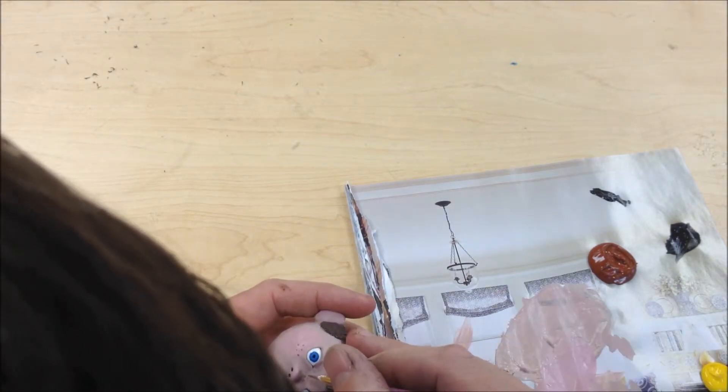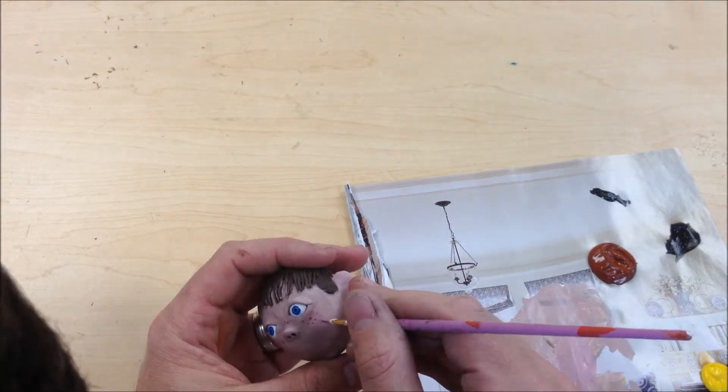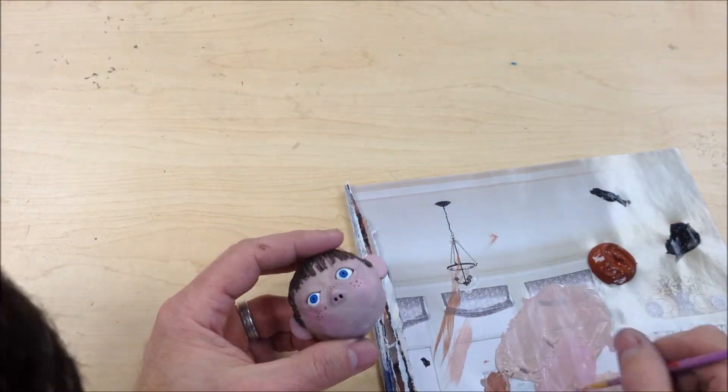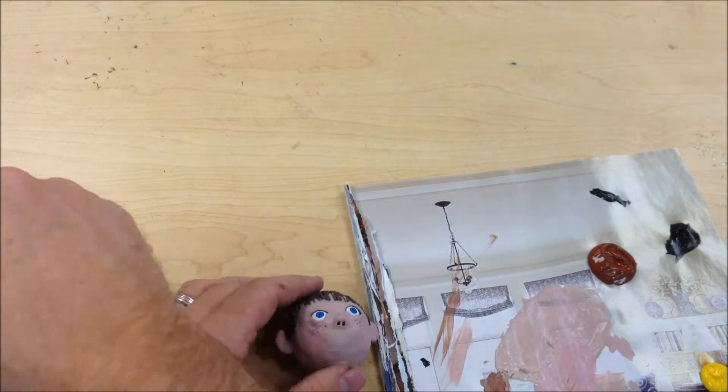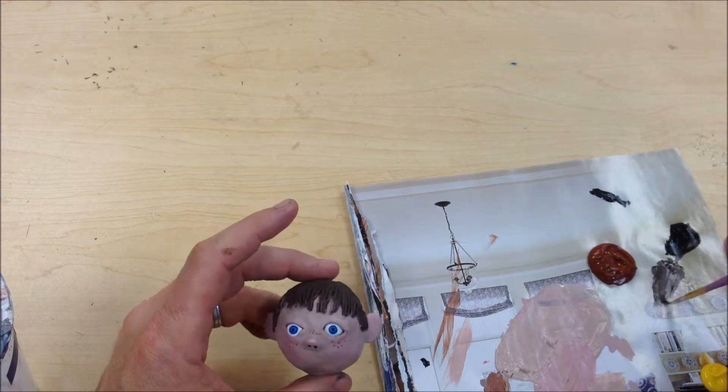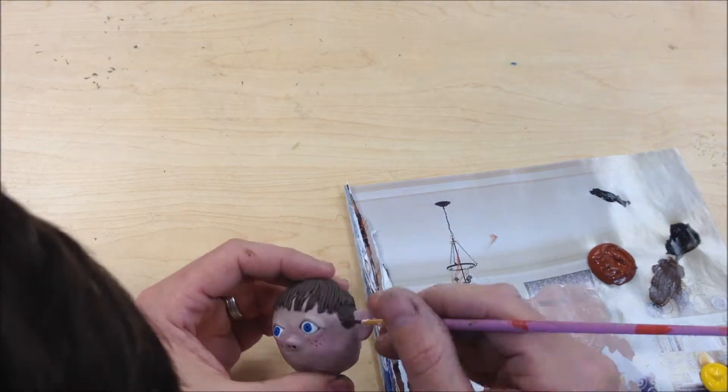I'm painting freckles with a darker color, similar to that first skin color I started with. Making sure I just get the cheeks and the top of the nose, not going too nuts. And here I am kind of toning it back down, some of the weird shapes with the other skin color, the original skin color.